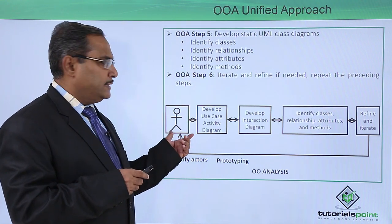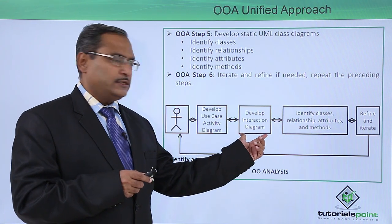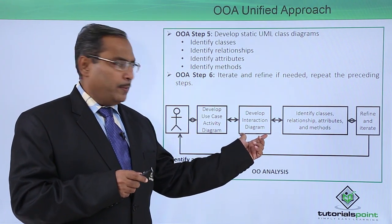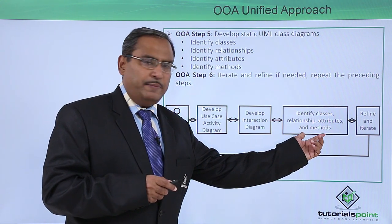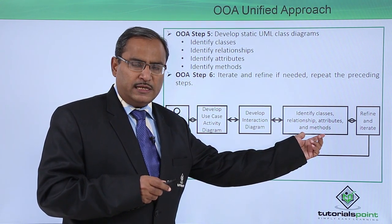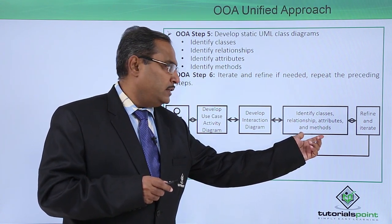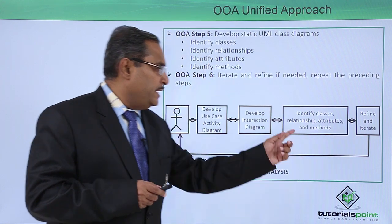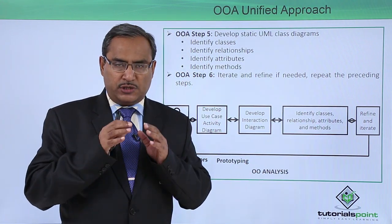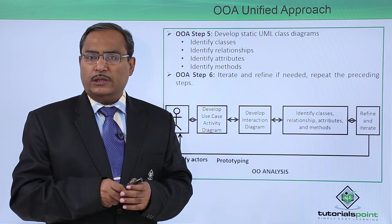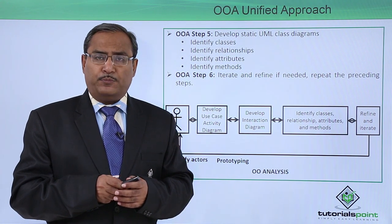In summary, the Object Oriented Analysis Unified Approach involves: identifying Actors, developing use case and activity diagrams, developing interaction diagrams including Sequence and Collaboration diagrams, identifying classes with their relationships, attributes, and methods, and then refining and reiterating until the system is stable and in accordance with requirements.